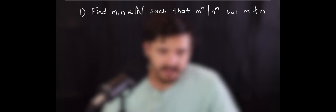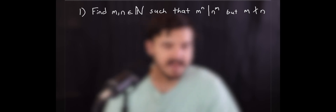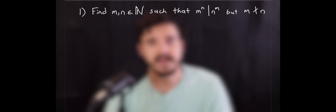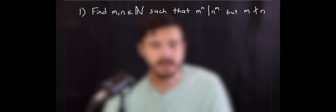That definition pretty much follows from the name as well — d is the greatest common divisor. With that, let's get into our first example. So for our first example, we're going to be trying to find two natural numbers m and n that satisfy m to the n dividing n to the m, but we have that m does not divide n.